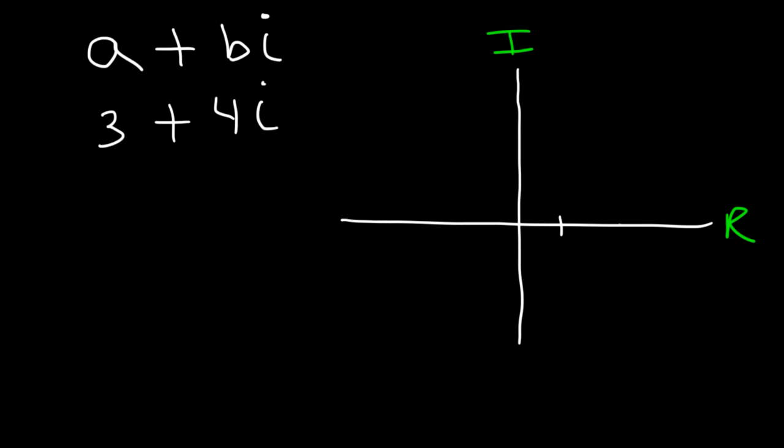So because 3 represents the real number, we need to travel 3 units to the right and 4i is the imaginary number so we need to go up 4 units. So to plot 3 plus 4i, here it is.